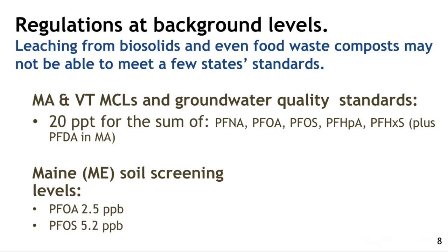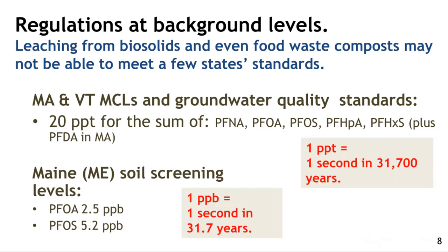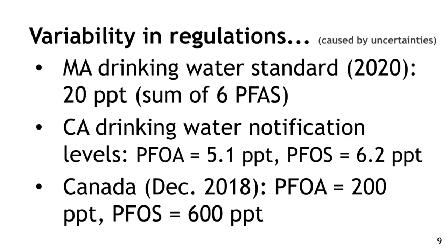Maine is the only state that has set a screening value for biosolids — treated sewage sludge used on soils. 60% of the sewage sludge produced in the U.S. is applied to soils, and the only screening value in the country is Maine's, with very low numbers. When talking about solids, we generally use parts per billion, and those are the kinds of numbers we'll use today. When talking about waters, we generally talk about parts per trillion. It's important to be certain about which units you're using.